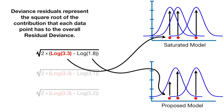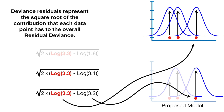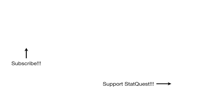In summary, deviance residuals represent the square root of the contribution that each data point has to the overall residual deviance, and we use them to identify outliers. We've made it to the end of another exciting StatQuest. If you like this StatQuest and want to see more, please subscribe. And if you want to support StatQuest, please click the like button below and consider buying one or two of my original songs. Until next time, quest on!